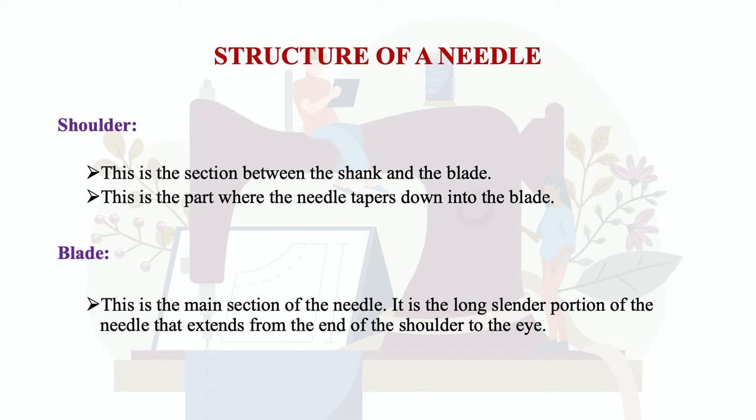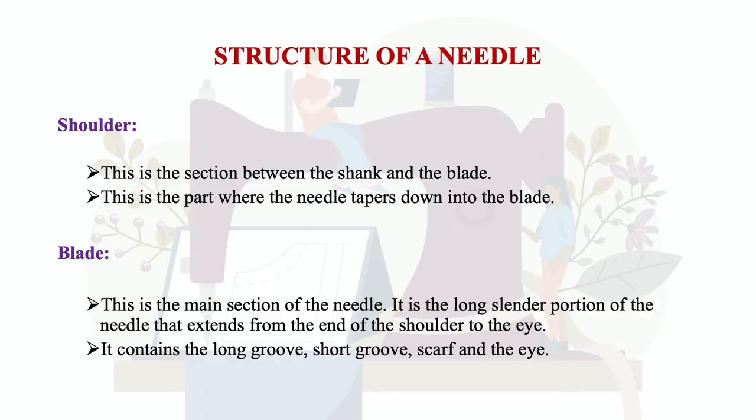The fourth part is the blade — the main section of the needle. It is the long, slender portion extending from the end of the shoulder to the eye. The blade contains the long groove, short groove, scarf, and eye. You can take a machine needle and correlate it with the picture to identify each section.